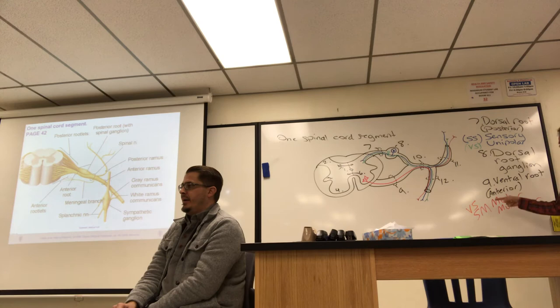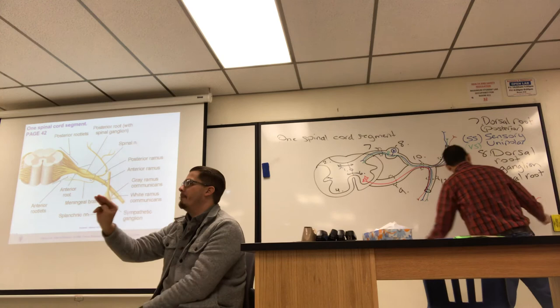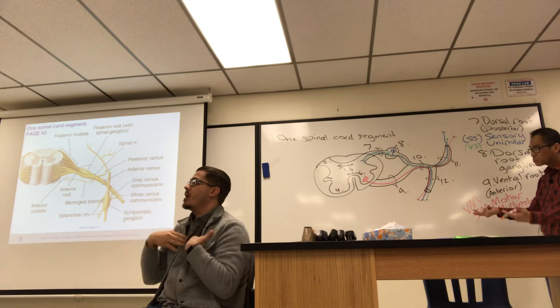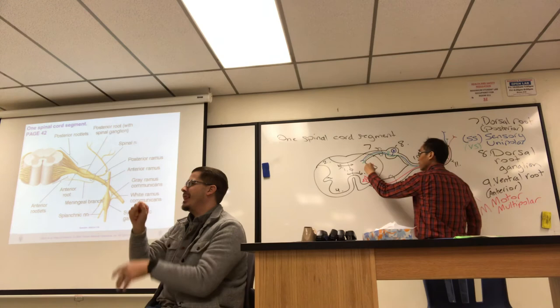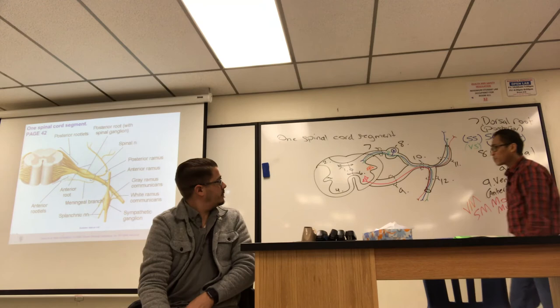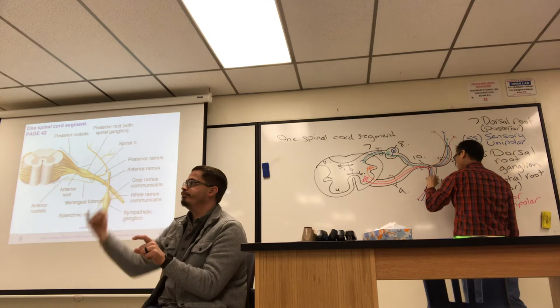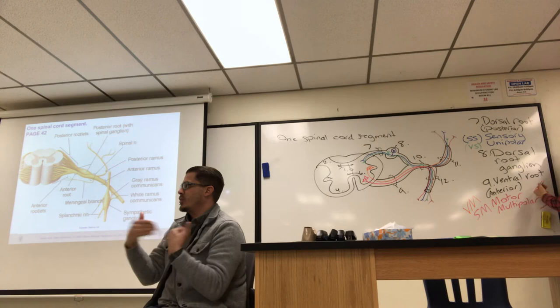The visceral motor neurons — VM — have their cell bodies in the lateral horn and also extend their axons through the ventral root. So there are four functional types: somatic motor, visceral motor, somatic sensory, and visceral sensory.